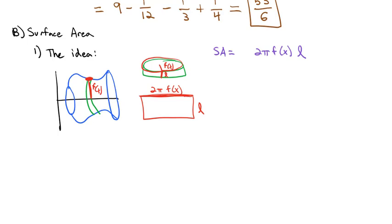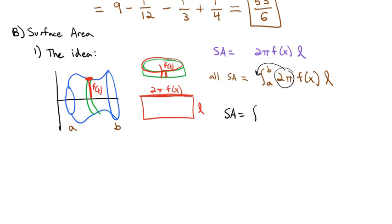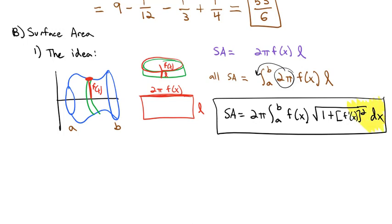So if we put it all together, the surface area of just this piece is going to be 2π times f(x) times the piece of the arc length. We want the entire surface area, so we integrate from a to b to get all the pieces added together: 2π times f(x) times the arc length. This becomes the formula for the surface area of a curve rotated around the x-axis: 2π times the integral from a to b of f(x) times the square root of 1 plus the derivative squared dx.